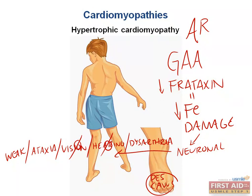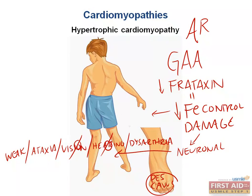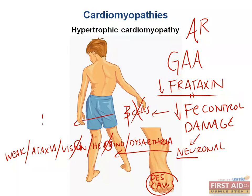Regarding diabetes seen with Friedreich's ataxia: poor control of iron means it can go places and create problems in areas that are highly metabolically active. Neurons are highly metabolically active, and so are beta cells within the pancreas, which make insulin. If they are blasted with too much iron because you cannot control it due to low levels of frataxin, you get diabetes mellitus.